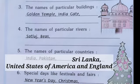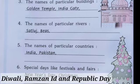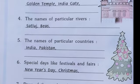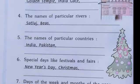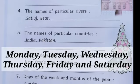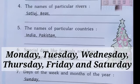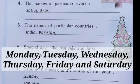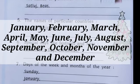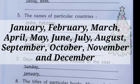The sixth category is festivals and fairs, so we add Diwali, Ram Navami, and Republic Day. The seventh one is days and months, so we can add days like Monday, Tuesday, Wednesday, Thursday, Friday, and Saturday after Sunday, and all the months that follow January: February, March, April, May, June, July, August, September, October, November, and December.